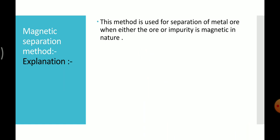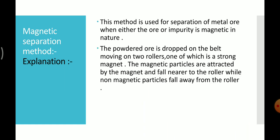First explanation point: this method is used for separation of metal ore when either the ore or impurity is magnetic in nature. Second point: the powdered ore is dropped on a belt moving on two rollers, one of which is a strong magnet. The magnetic particles are attracted by the magnet and fall nearer to the roller.